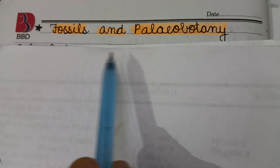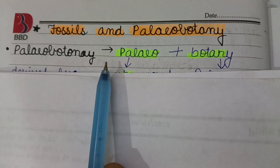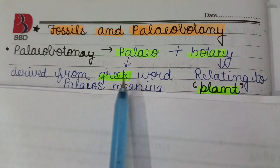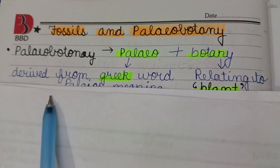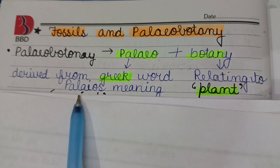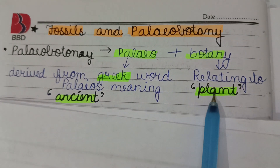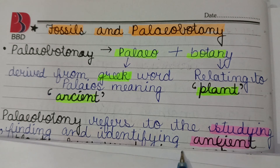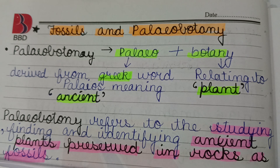First, let us know about Palaeobotany. Palaeobotany is the combination of two words: Paleo and Botany. Paleo is derived from the Greek word 'Paleos', meaning ancient. Botany relates to plants. So Palaeobotany refers to the studying, finding, and identifying ancient plants preserved in rocks as fossils.